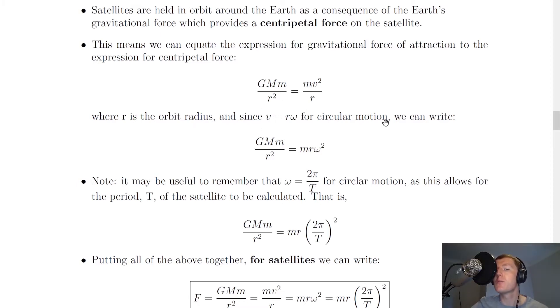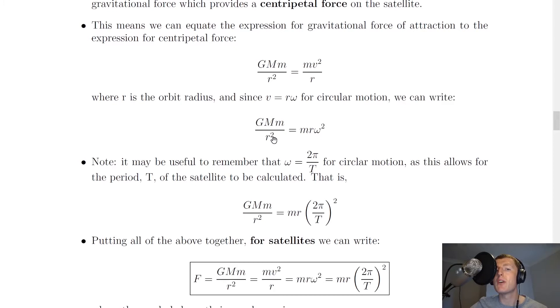Since v equals rω for circular motion, we can also write GMm/r² equals mrω². This is another expression for centripetal force in terms of the angular velocity omega.